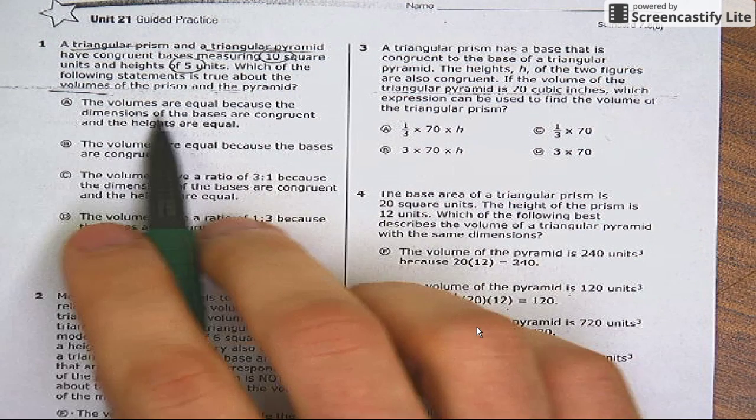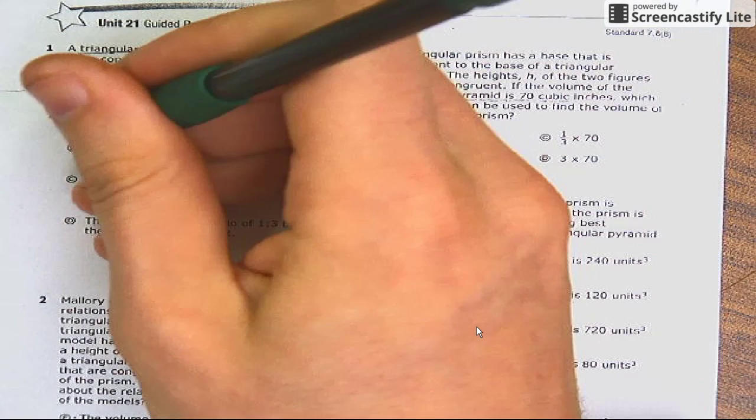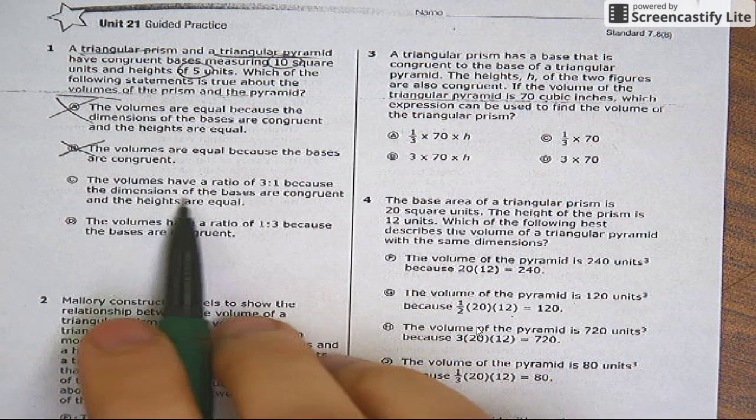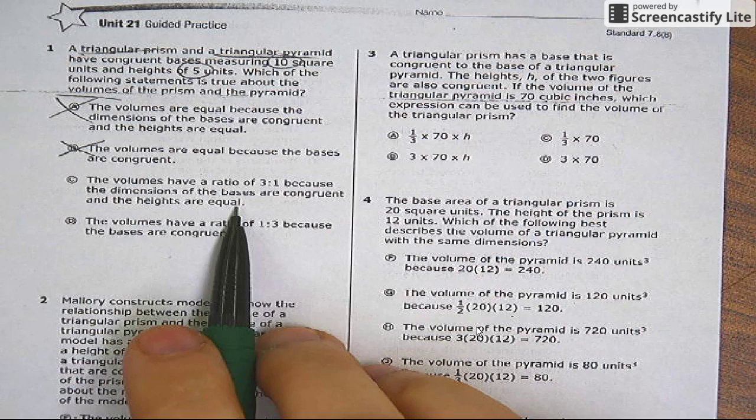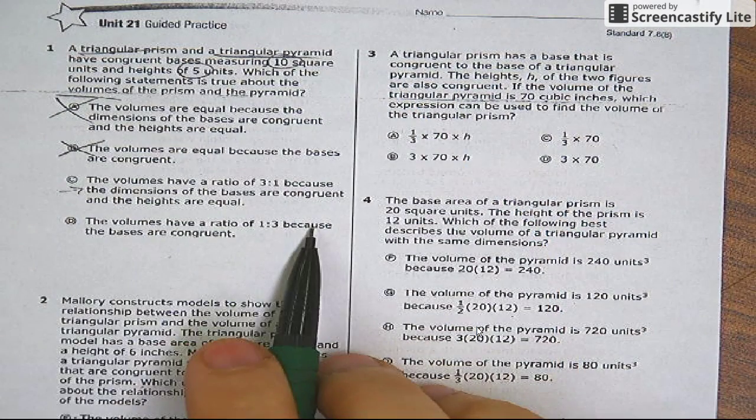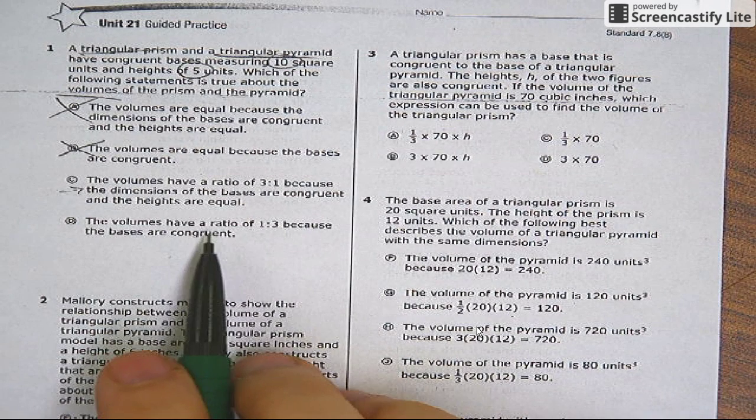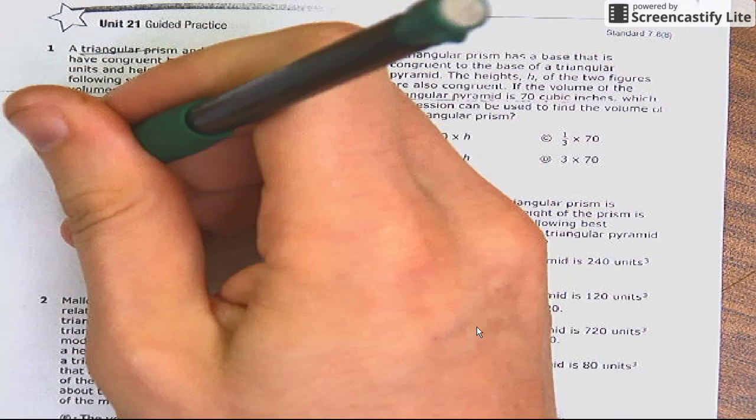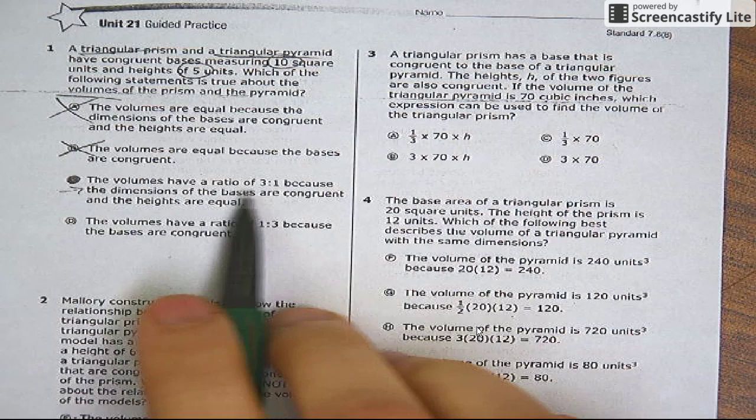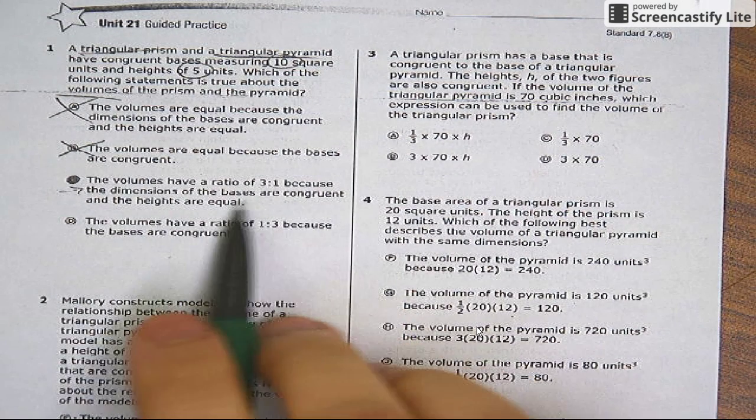Which is true? The volumes are equal? No. The volumes have a ratio of three to one because the dimensions of the bases are congruent and the heights are equal. That sounds pretty good. The volumes have a ratio of one to three—it's true, because the bases are congruent. Well, no, we're missing the heights thing, right? You have to talk about their heights. So answer choice C. Their ratio is three to one or one to three because their bases are equal, congruent, and their heights are equal.